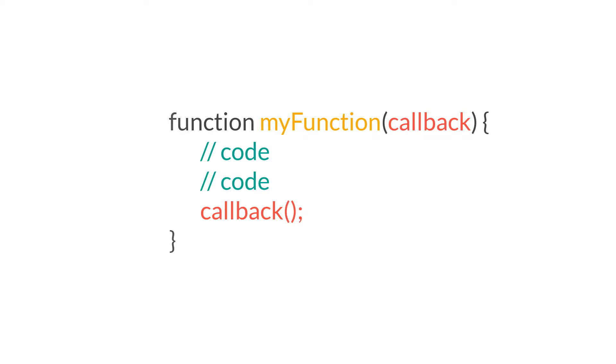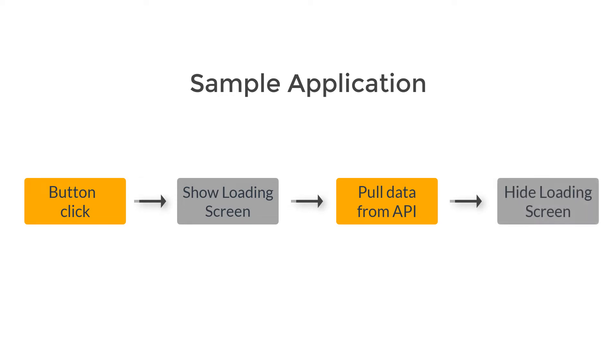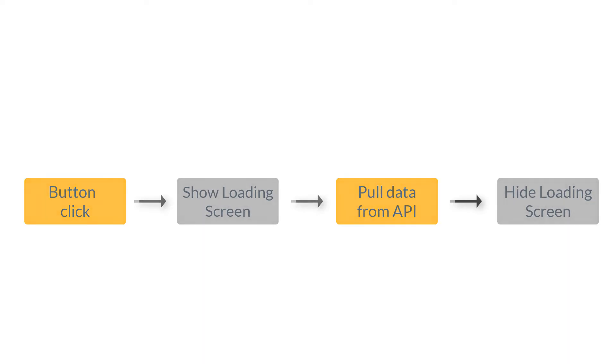Let's use a practical example. I'm developing an application where when a user clicks a button, I need to get some data from an API. The order of operations is: first show a loading screen, then pull the data from the API, then hide the loading screen and show the data. For that I'm gonna need three functions.